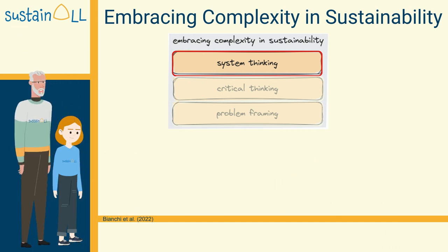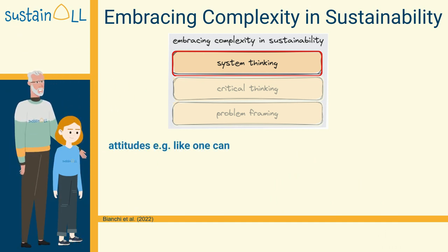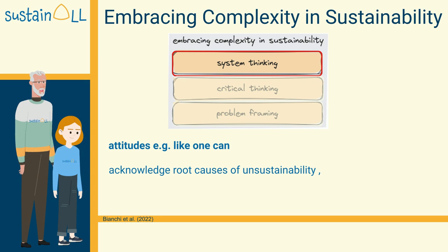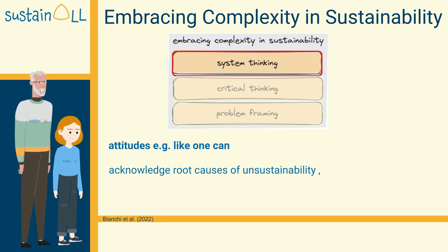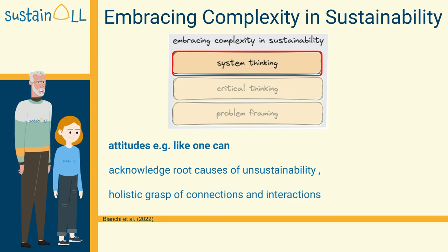And finally, as a part of systems thinking, attitudes like acknowledging the root causes of unsustainability for which humans are responsible — such as climate change — or having a holistic grasp of connections and interactions between natural events and human actions, are relevant.